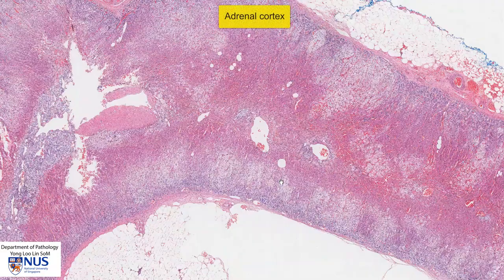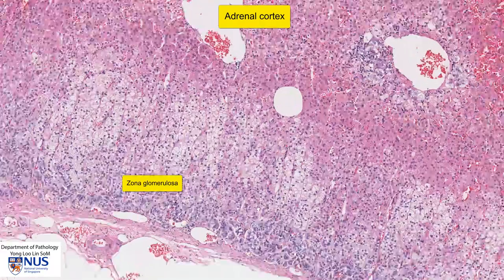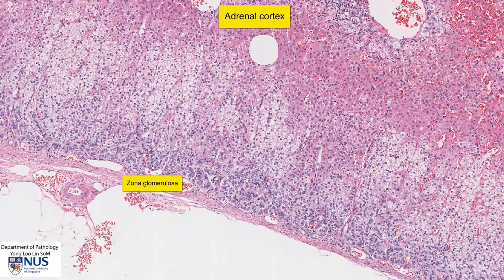Let's zoom in to the adrenal cortex, starting from the outermost layer. This is the zona glomerulosa, and the cells here are arranged in oval nests. The cells don't have that much cytoplasm. The zona glomerulosa cells elaborate mineralocorticoids, such as aldosterone.